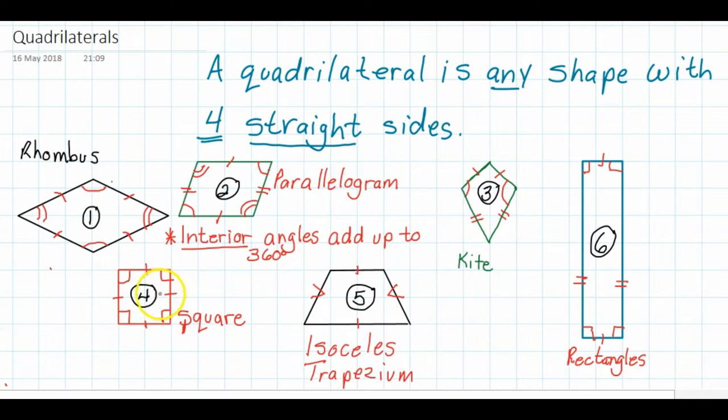All right, a square is pretty obvious. It's got four sides. The opposite sides are parallel to each other. It's made up of four right angles and the sides are of equal size and length.